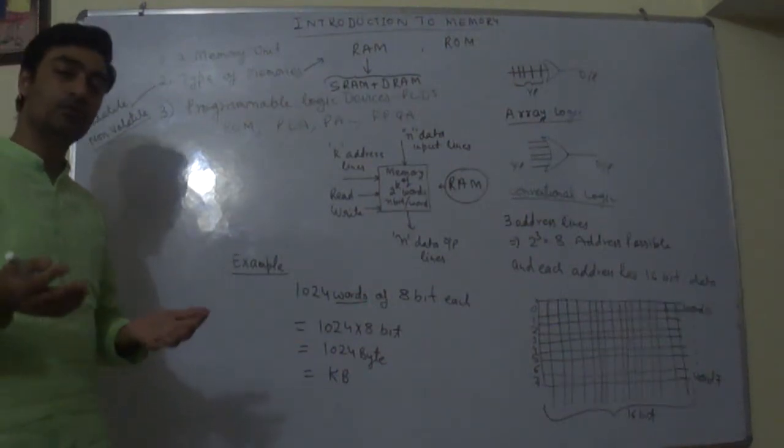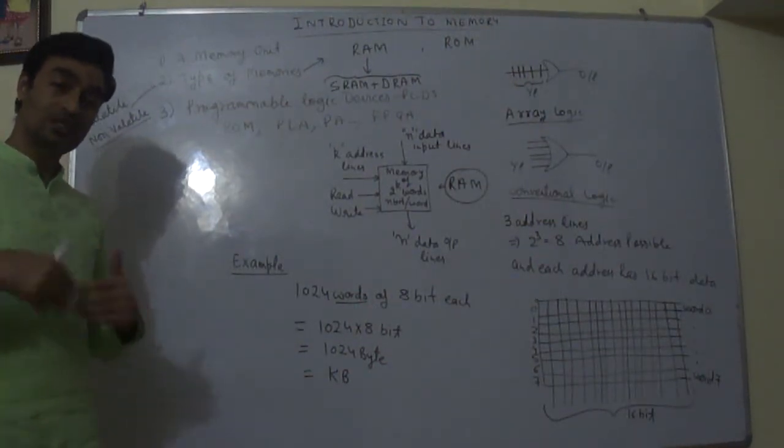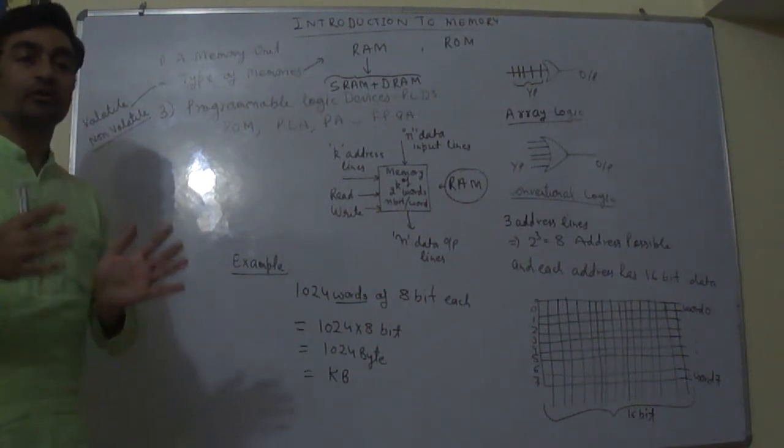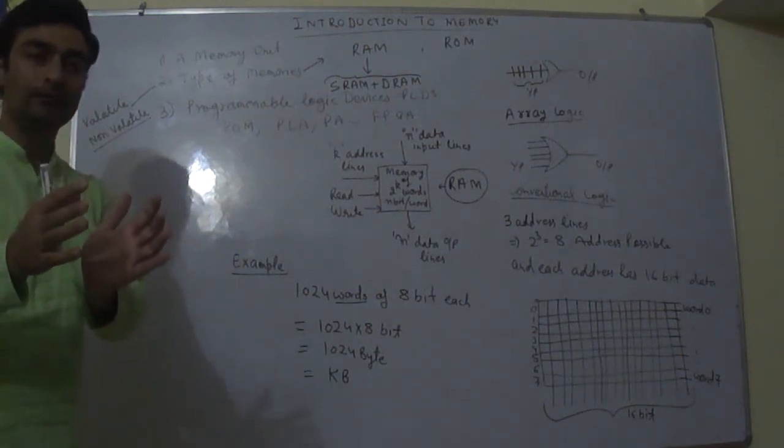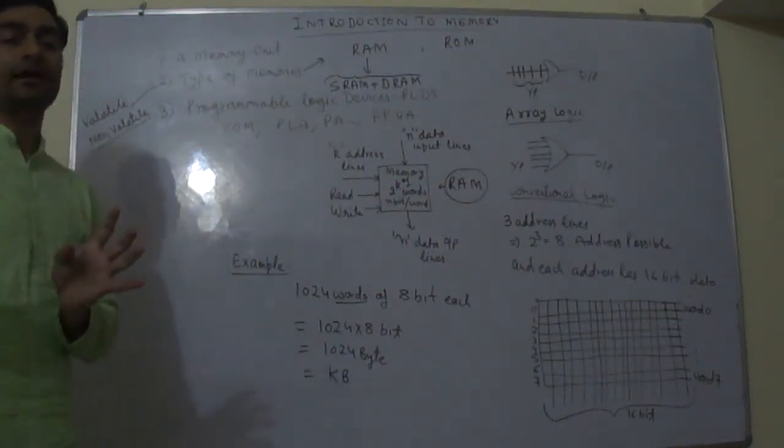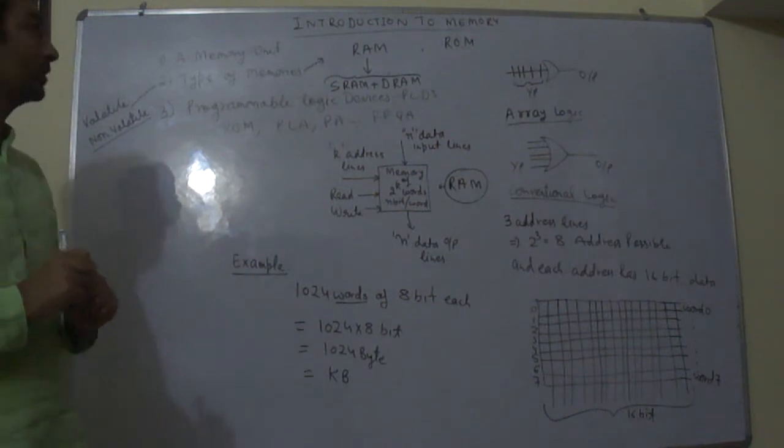We extract information for the purpose of processing the information. So while we process the information, we take information from the memory, store it in the register, process it, and again put it back into the main memory.